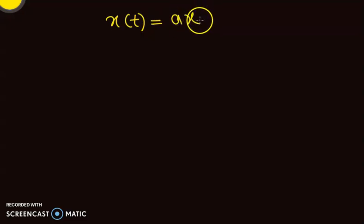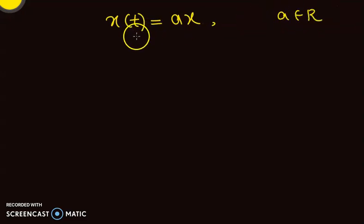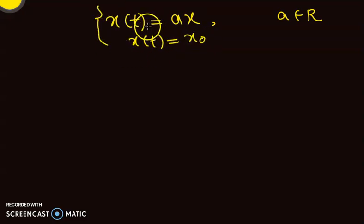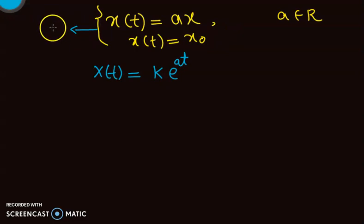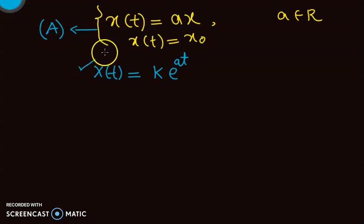Now let's consider the simplest example of an ODE: x-dot equals ax, where a is some parameter or number from the real numbers. With initial condition x of 0 equals x-naught. From your ordinary differential equations course you know that x of t equals k times e to the power at is the solution — let me call this equation A.